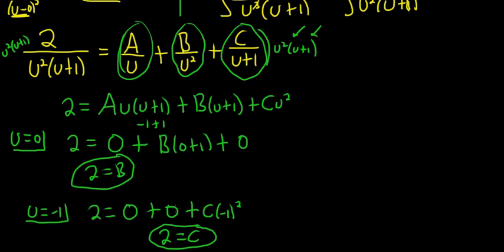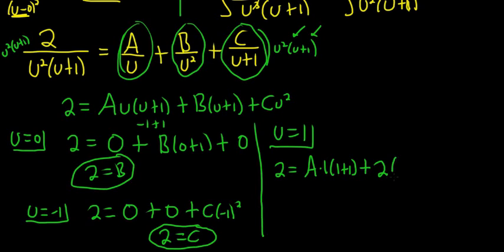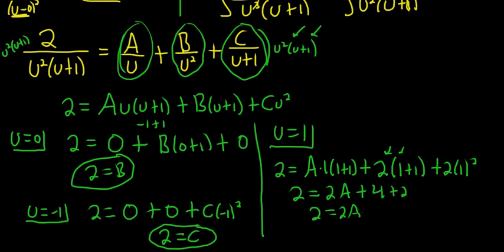And now we just have to find A. So I guess we can plug in any number we like, besides 0 and negative 1, to find A. Let's plug in 1. So if u is equal to 1, we have 2 equals A times 1, and then 1 plus 1, plus B, but we know what B is. B is 2. And then u plus 1, so 1 plus 1. And then C, but we know what C is. C is 2, so 1 squared. So we have 2 equals 2A plus, and then this is 2 times 2, so 4 plus 2. So 2 equals 2A plus 6. Subtract the 6, so you get negative 4 equals 2A. Therefore, A equals negative 2.